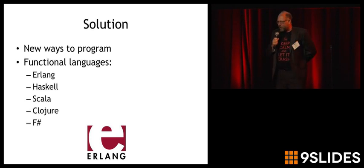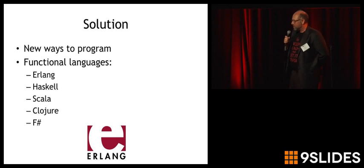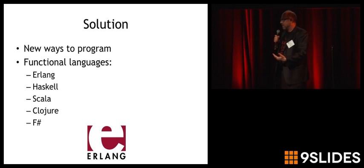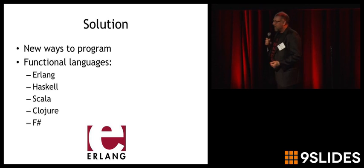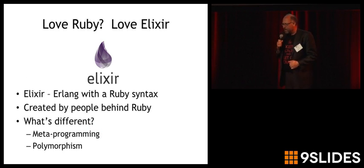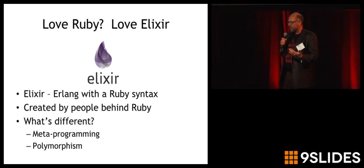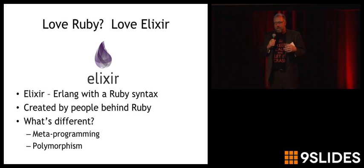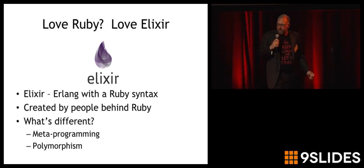A language like Erlang solves your CPU performance problem by having a new way to program called functional programming. There are other languages you may have heard of in this family, including Haskell, Scala, Clojure, and F#, which all have some of the same ways of approaching the problem.